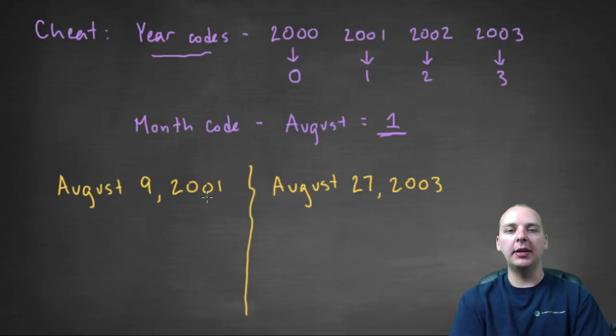In the previous video, I explained how we're going to take the month code, the day code, and the year code, and add them together. So, let's do that.